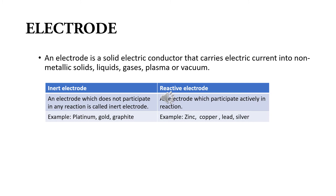Uses of electrodes: Electrodes are used to generate electrical current and pass it through non-metallic objects. Electrodes are also used in batteries, electroplating, and electrolysis. Additionally, electrodes are used in the medical field — for example in ECG, ECT, and EEG. All these are the uses of electrodes.